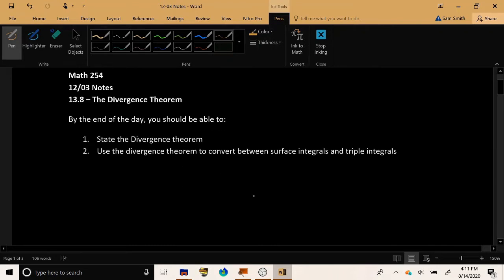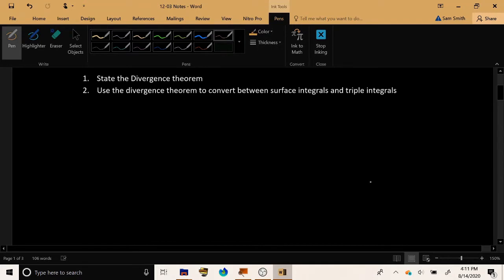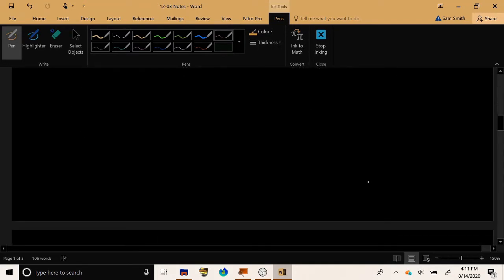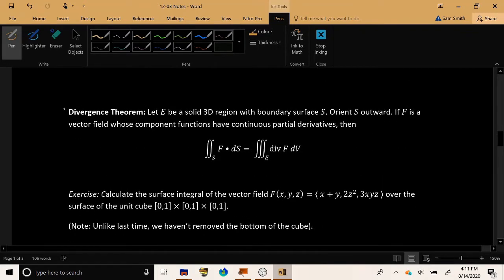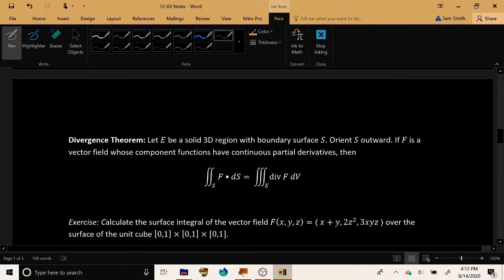So this is essentially Green's theorem in three-dimensional space. So here's the wonderful divergence theorem, and here is the setup. The idea is we have some solid 3D region. A quintessential example might be a filled-in sphere or a ball perhaps.